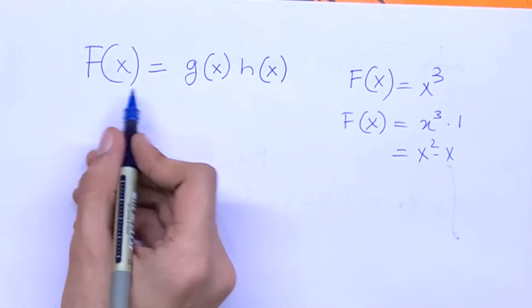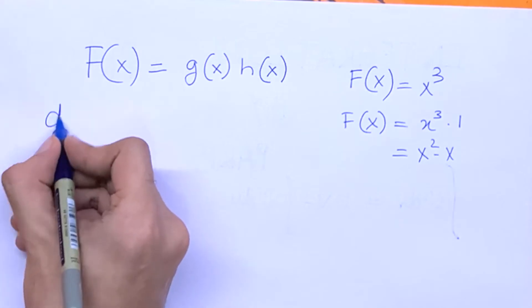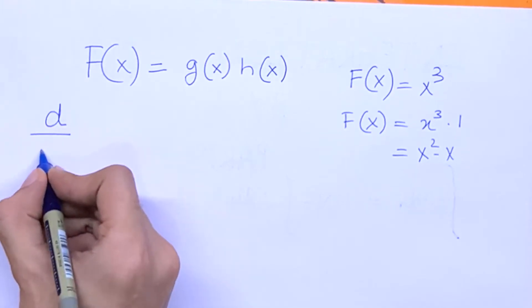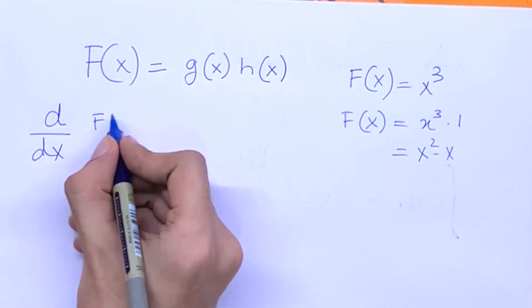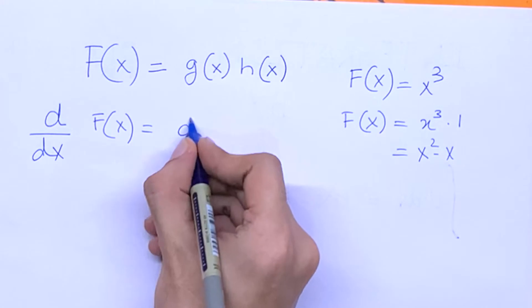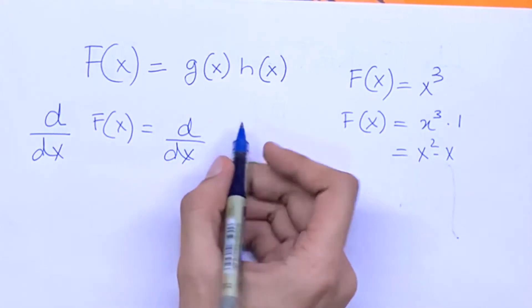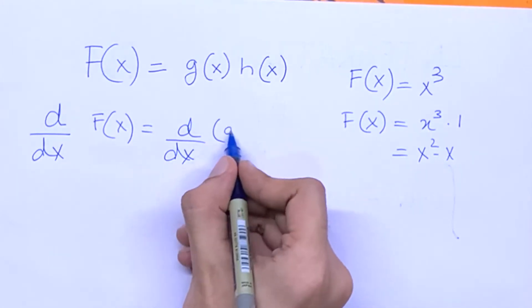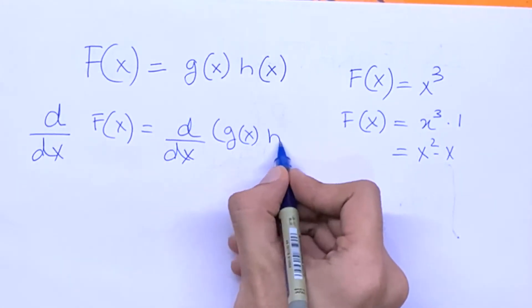So now let's take the derivative of both sides. On the right side, we will have to use the product rule.